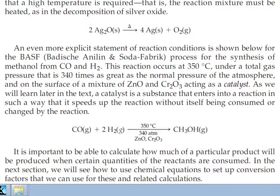A catalyst is a compound that doesn't get consumed or produced in the reaction, but it increases the rate of reaction. A catalyst is a substance that enters into a reaction in such a way that it speeds up the reaction without itself being consumed or changed by the reaction. So CO + 2H₂ gives methanol, CH₃OH. As you can see, the temperature, pressure, and type of catalyst are all shown in the chemical equation.